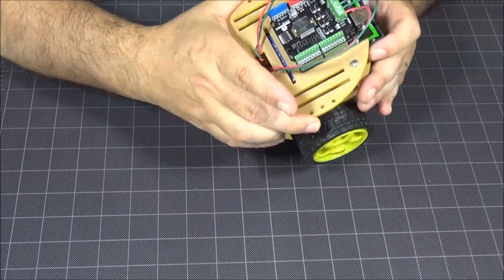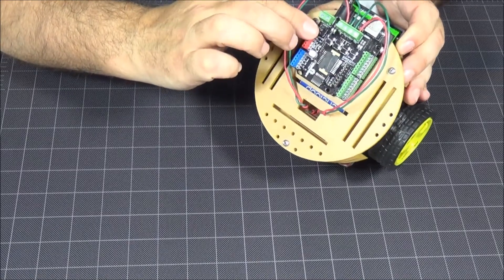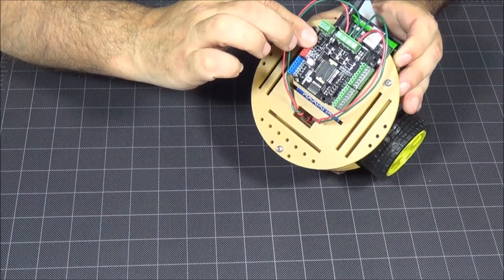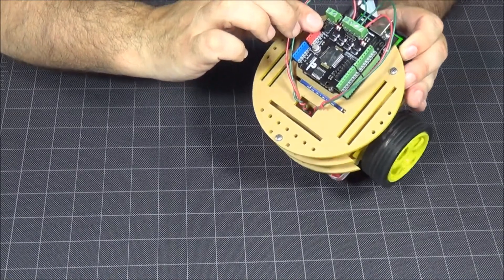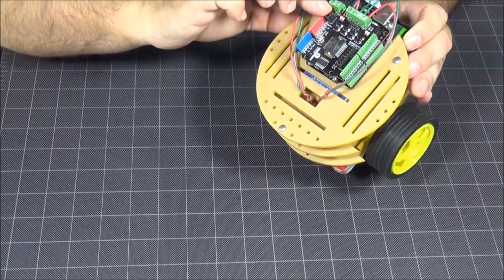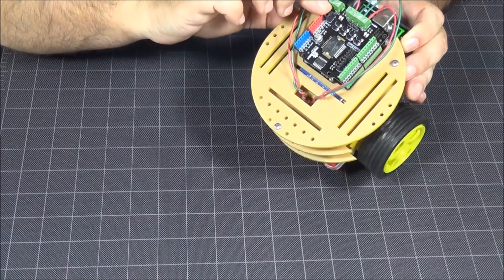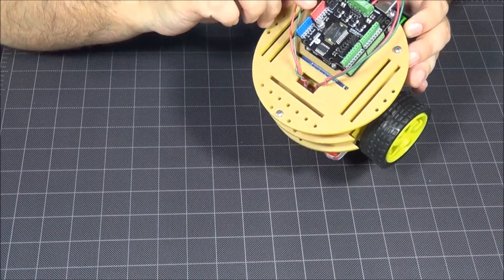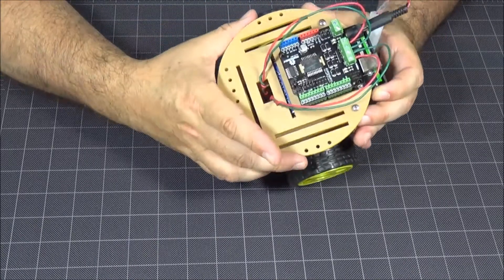See these LEDs over here? These are going to start changing when the motors start turning. You see that? So that's indicating the direction and the PWM for each one of those motors, which is pretty handy when you're debugging.